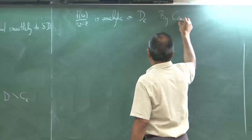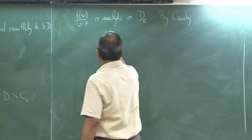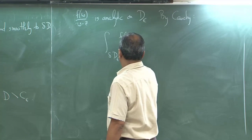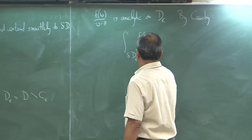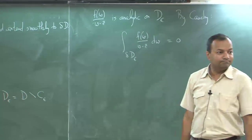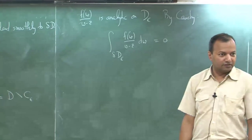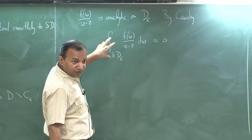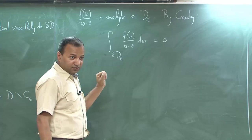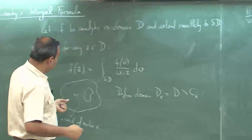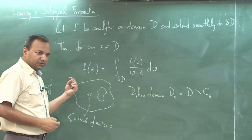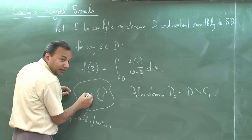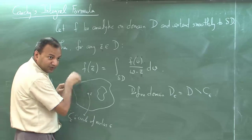Therefore, by Cauchy's theorem, if you integrate along the boundary of D_ε you get 0. Now let us see: the boundary of D_ε differs from the boundary of D only in this additional circle C_ε. The boundaries are identical except for this additional circle which is present in D_ε.